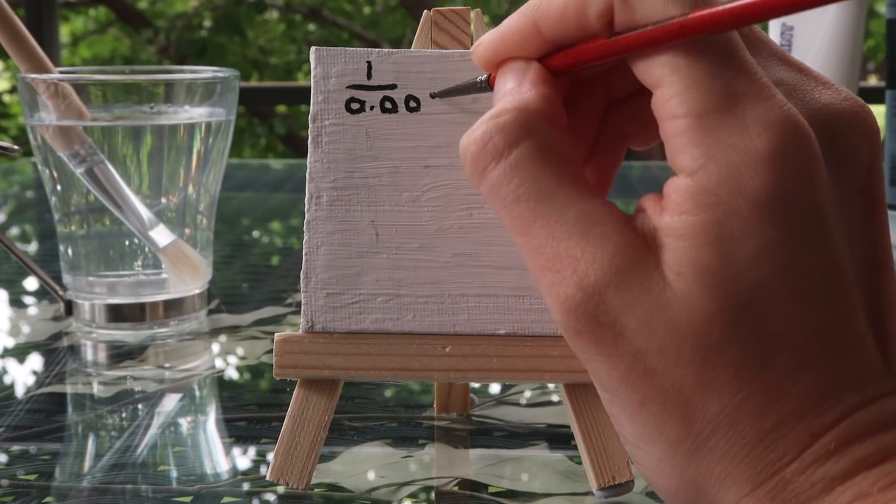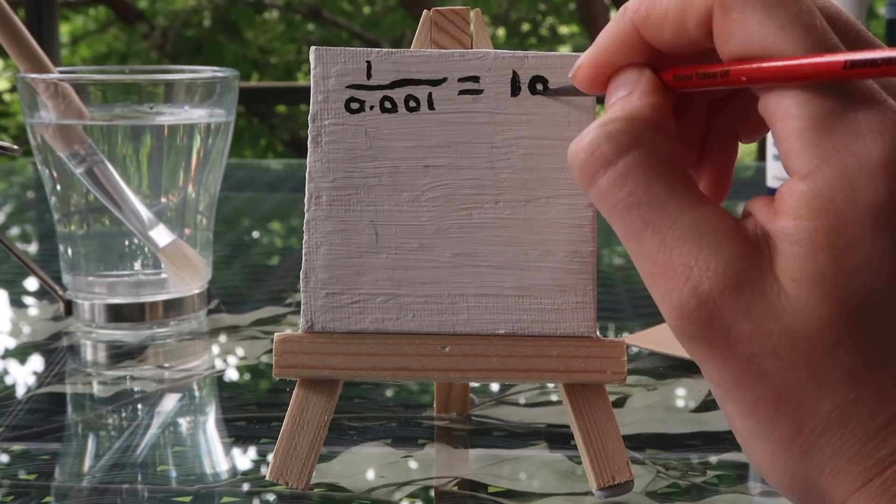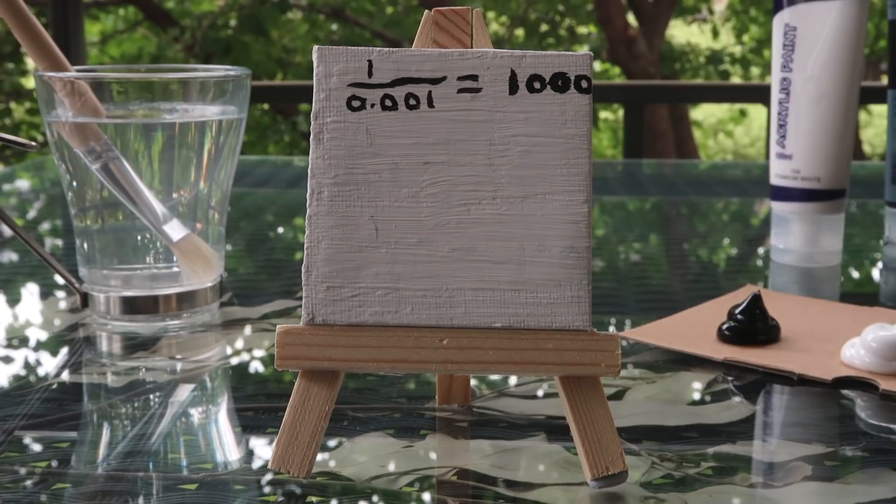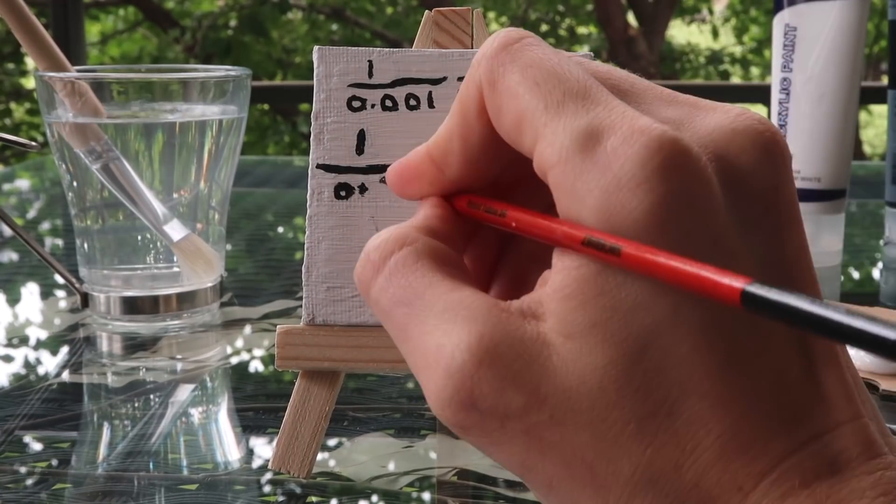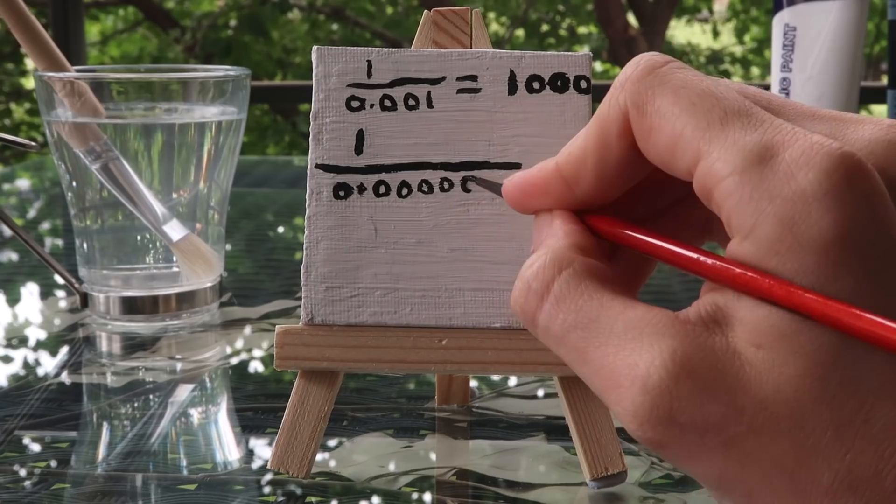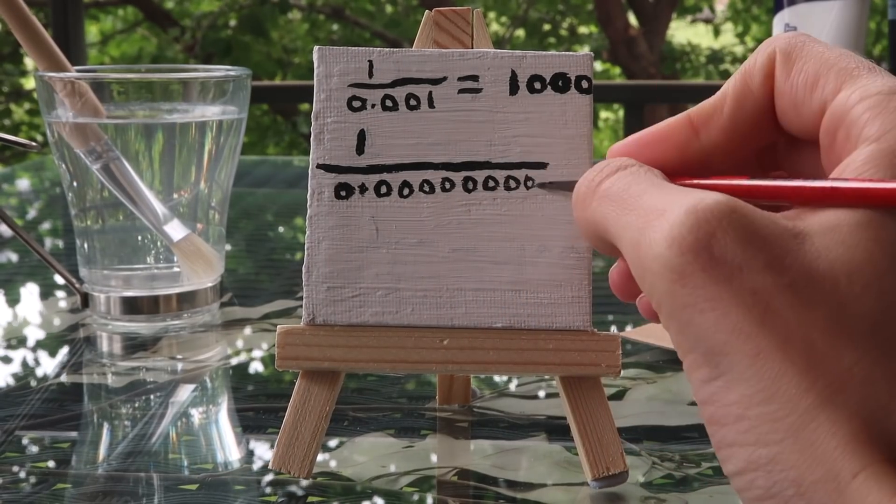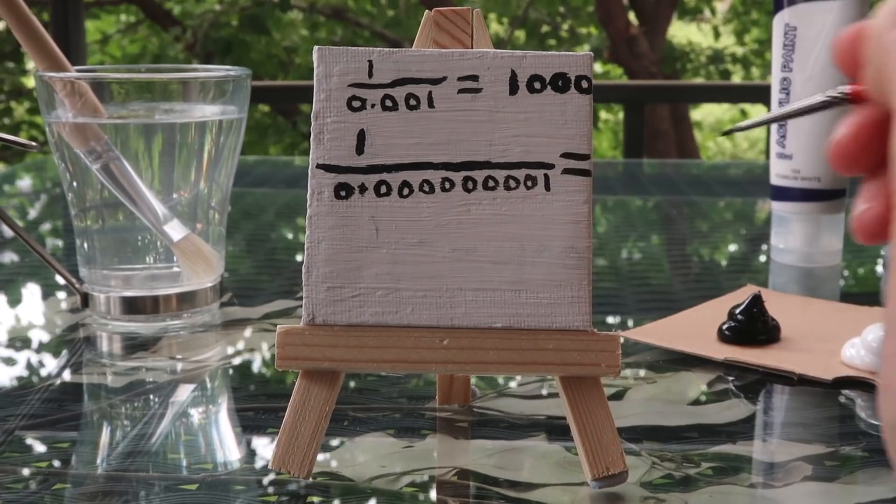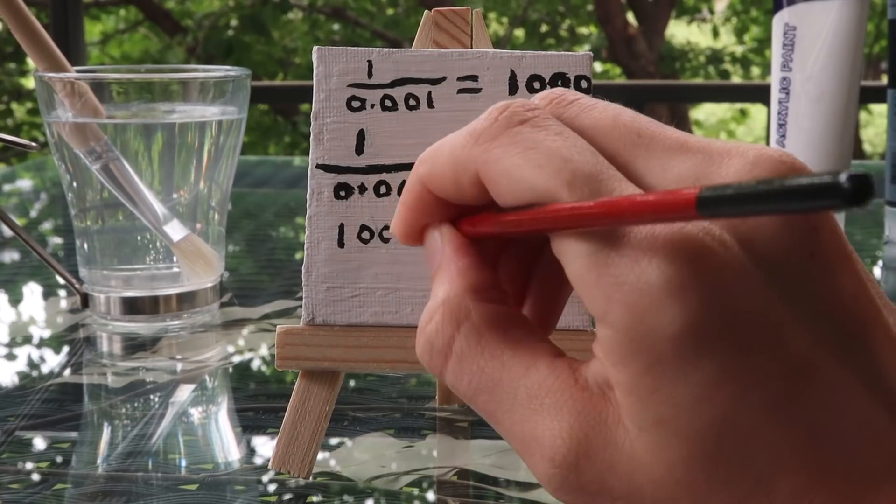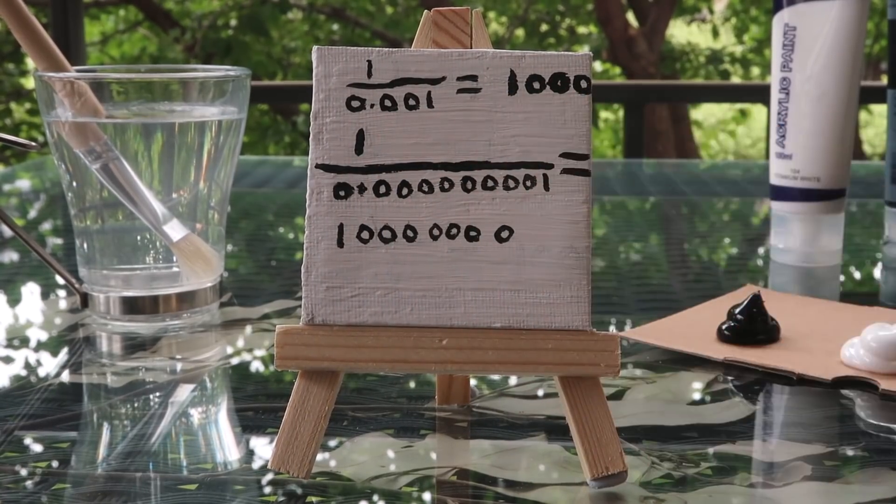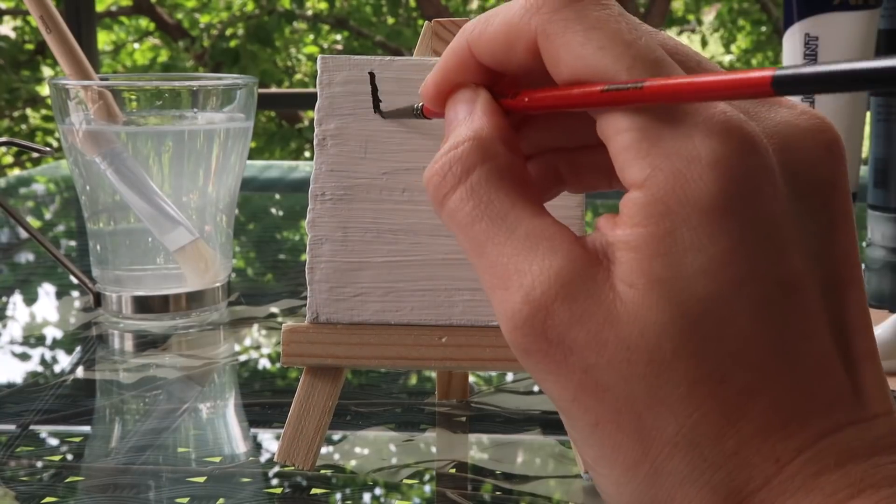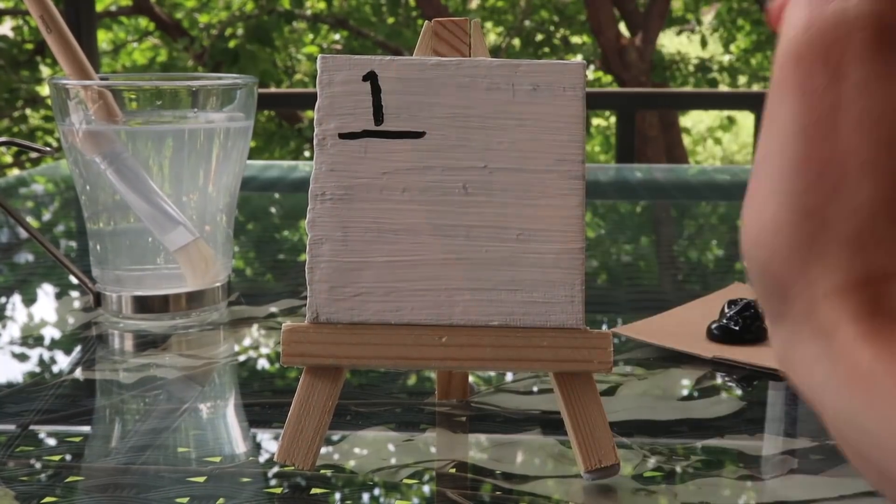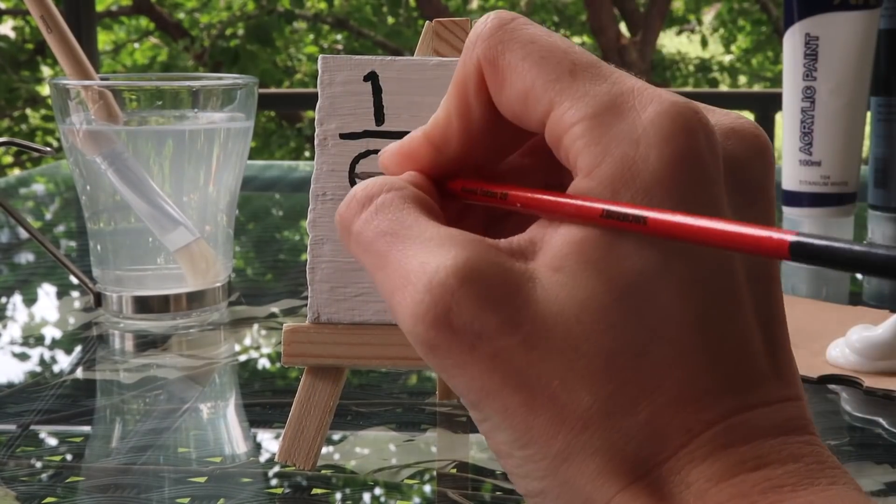1 divided by 0.001 is 1000. So how small can we go? Well, 1 divided by 0.000001, you can check on the calculator if you like, but it's 1 billion. And we could keep going smaller and smaller with our answer getting bigger and bigger.